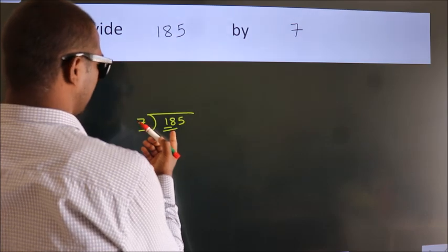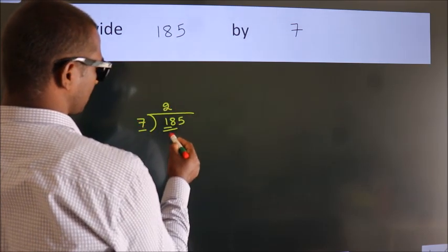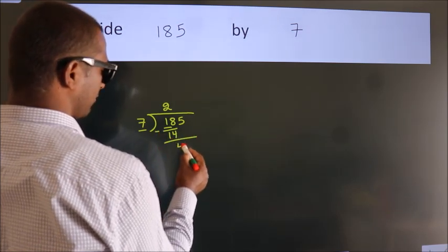A number close to 18 in the 7 table is 7 times 2, which is 14. Now we should subtract. We get 4.